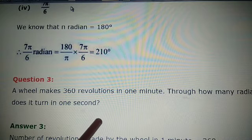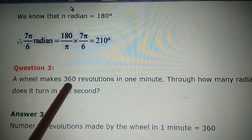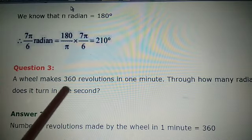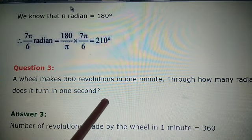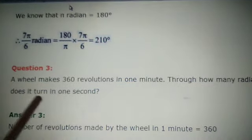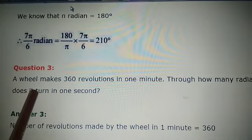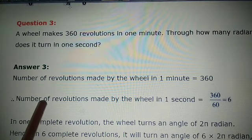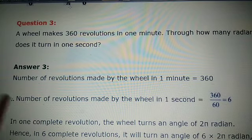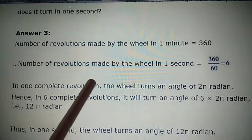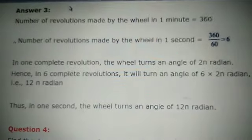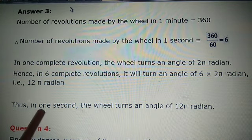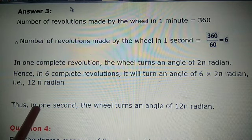Next question: A wheel makes 360 revolutions in one minute. Through how many radians does it turn in one second? In one minute it makes 360 revolutions, so in one second it makes 360/60 = 6 revolutions. Since one revolution = 2π radians, in 6 revolutions it turns 12π radians.